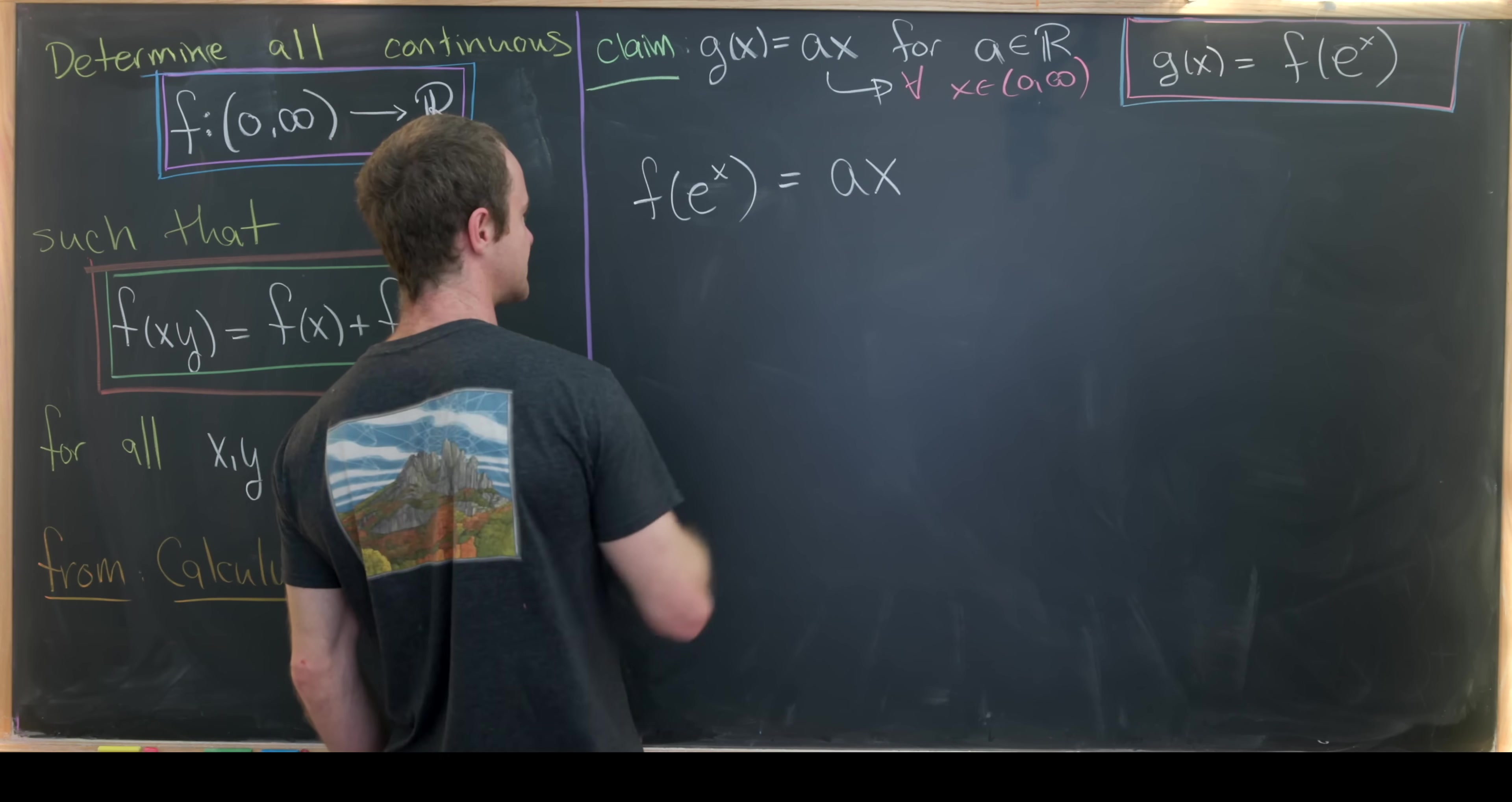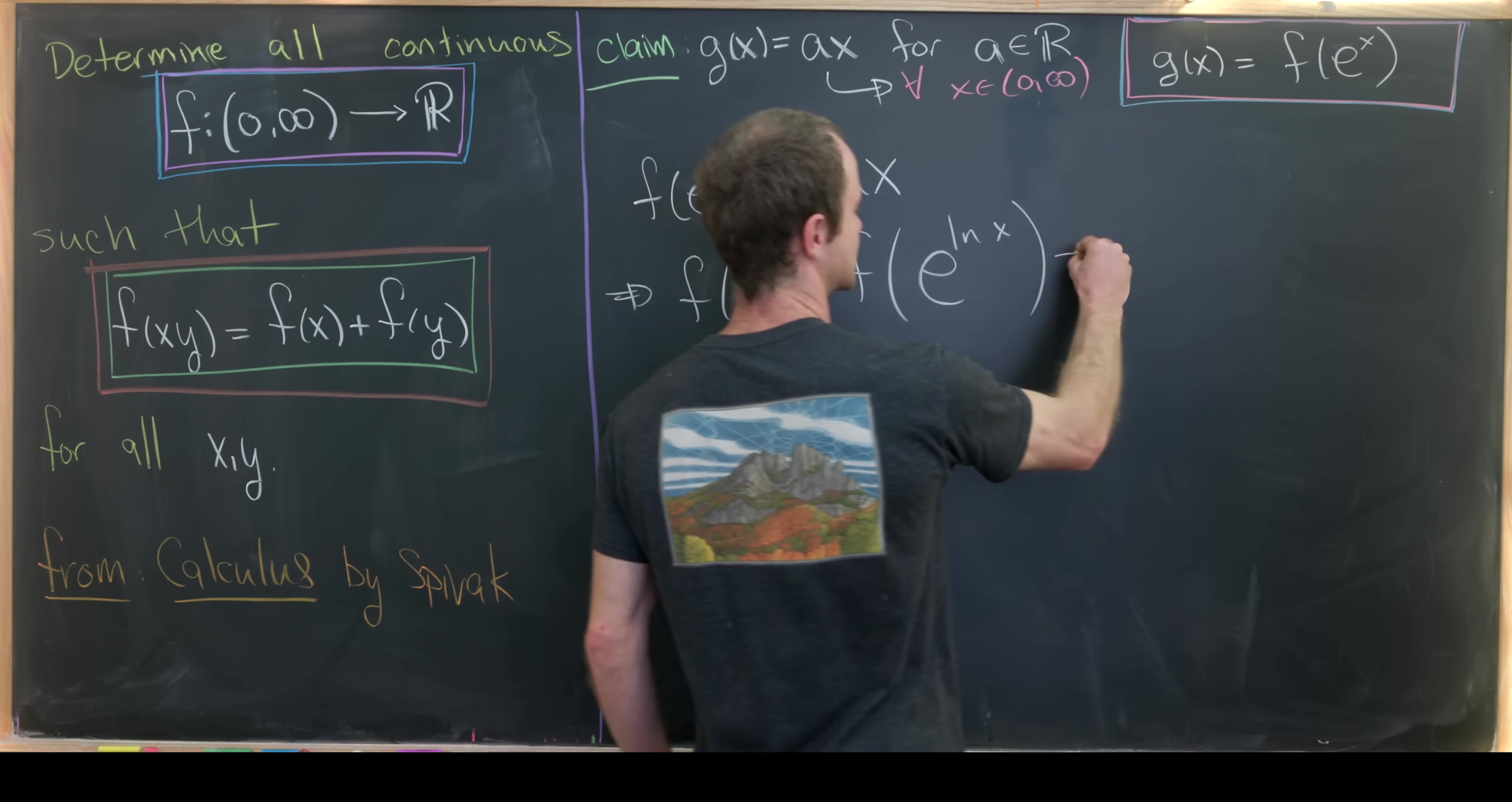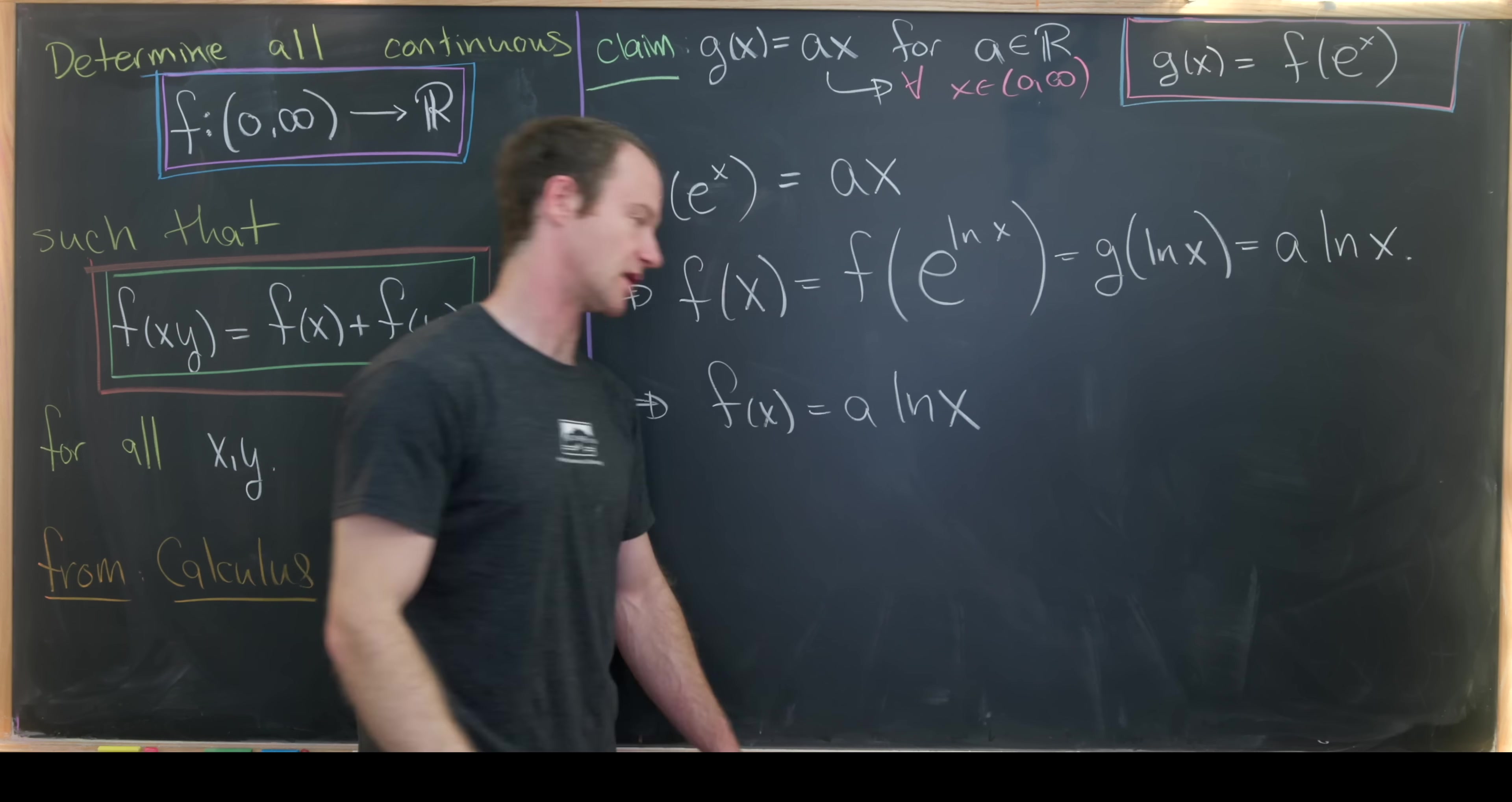And now we're going to compose something within this. And what we'll compose within this is the natural logarithm to cancel out this exponential. So just to look at all of the details, we have f(x) is the same thing as f(e^(ln x)), which is the same thing as g(ln x), which is the same thing as a times ln(x). So deleting out the middle, we see that f(x) is equal to a times ln(x).